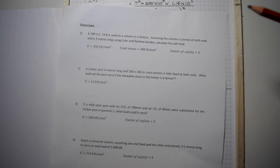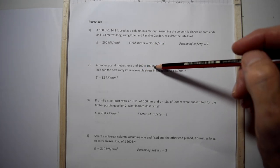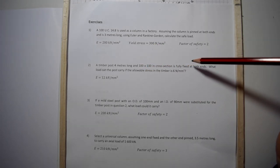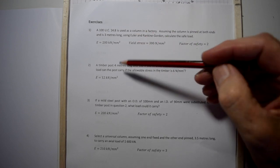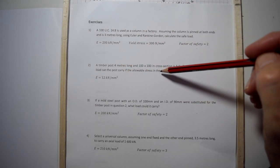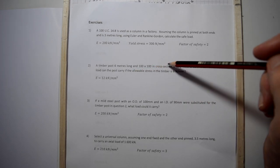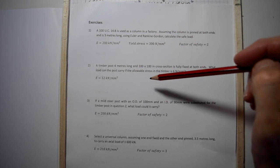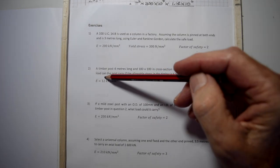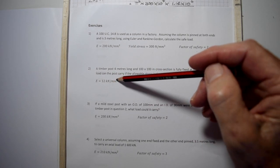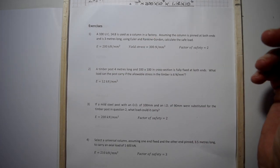Question two is a timber post four meters long, 100 by 100 cross section, fully fixed at both ends. What load can the post carry if the allowable stress in timber is six newtons per square millimeter? There's a catch in this one. The elastic modulus for timber is 12 kilonewtons per square millimeter.